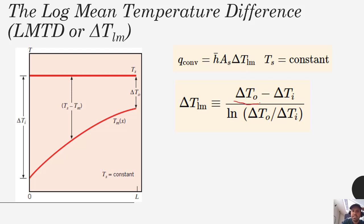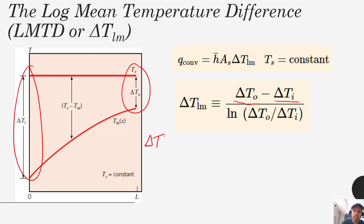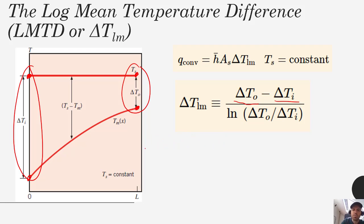The log mean temperature difference is expressed as delta T_outlet minus delta T_inlet divided by the natural log of (delta T_outlet / delta T_inlet), where delta T at a given location is the surface temperature minus the mean fluid temperature at that x. So Q convection equals H times A times delta T_LM, applicable for internal flow where the fluid temperature changes as a function of distance down the channel.